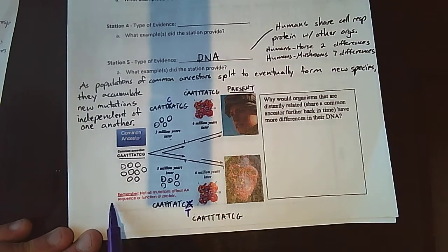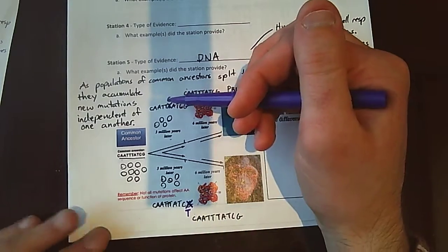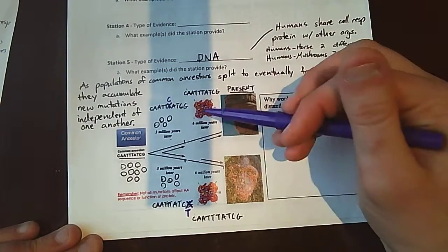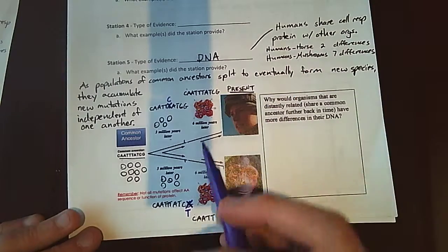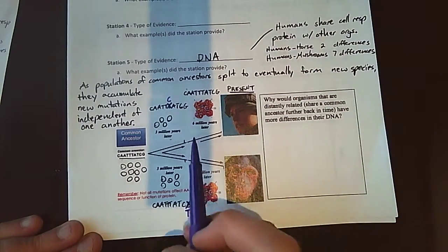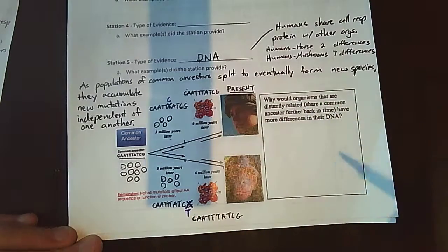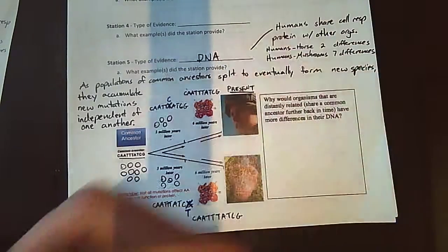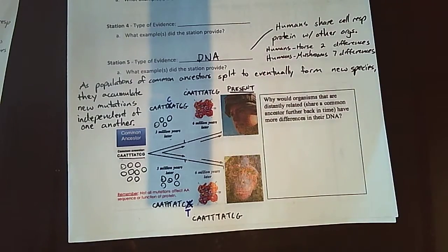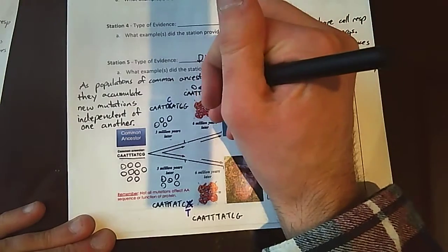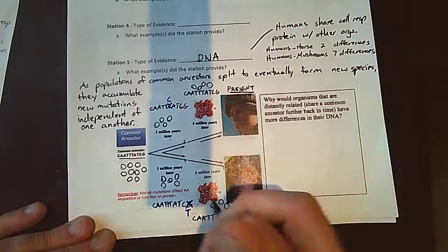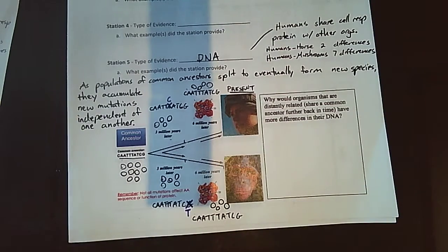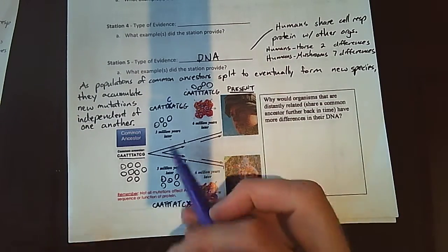Now, remember, not all mutations affect the amino acid sequence. Sometimes you have a change to the DNA sequence, and you still get the same hemoglobin protein. So let's say another three million years pass. So six million years later to our present day, finally this population of organisms has become human. And this population of organisms that had split off from that common ancestor is now chimpanzees. But since we had another three million years of time,